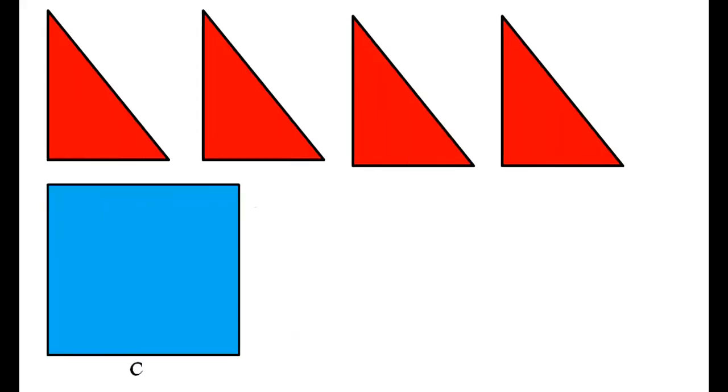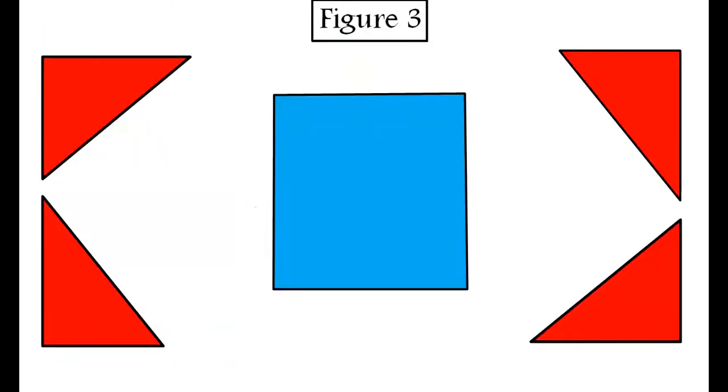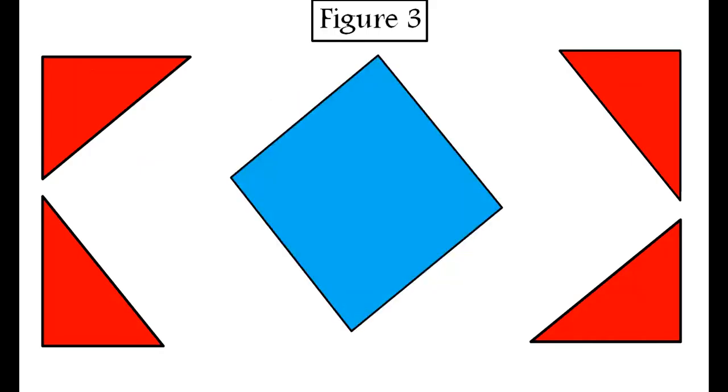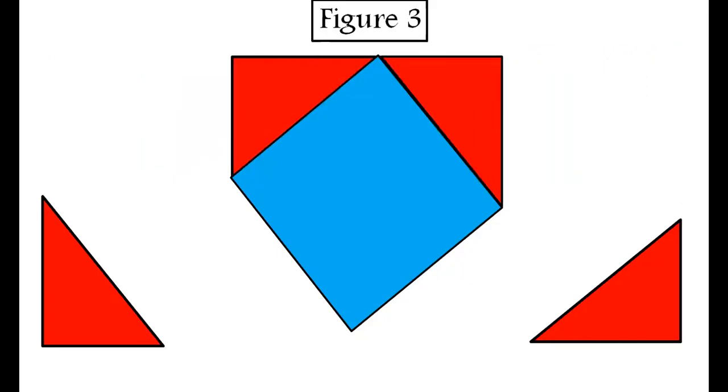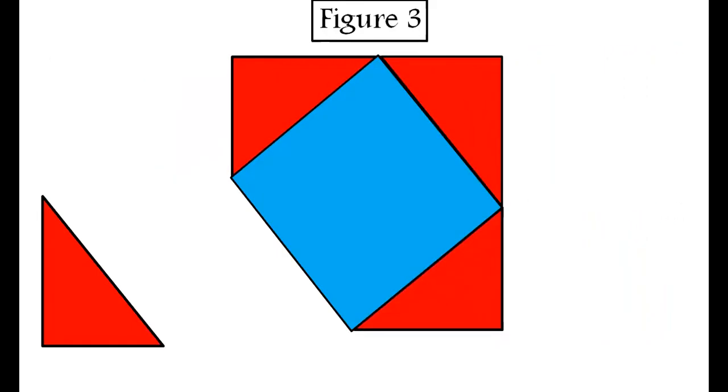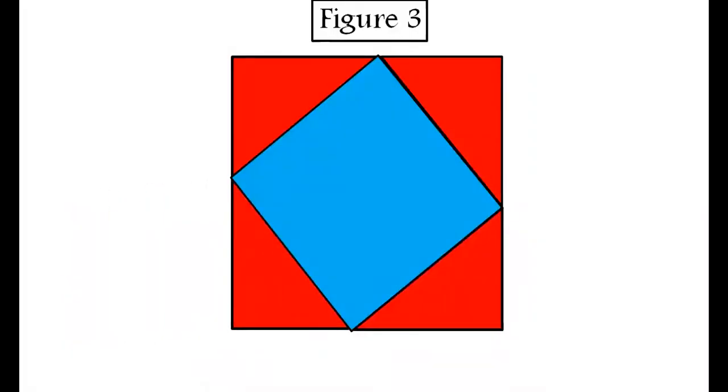For the next figure, we will take remaining 4 red triangles and 1 blue square with side c units. Let us arrange these cutouts. First, we will paste this square this way and then arrange the triangles around it like this. Once again, we notice that we have a perfect square with side a plus b units.